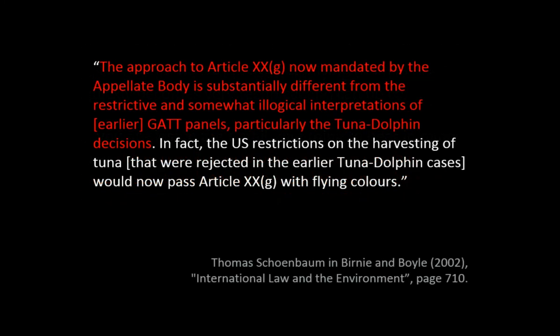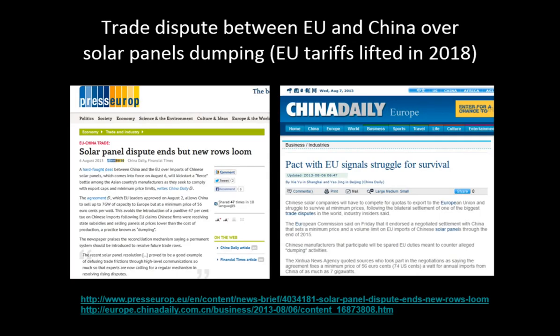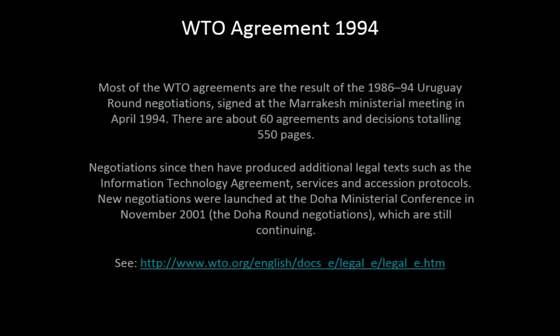The principles to be applied have changed over time — there have been somewhat illogical interpretations, and in fact the US restrictions in the tuna-dolphin case would now pass with flying colours. There are ongoing disputes — EU and China over solar panels and the like. GATT was signed in 1947, then there were rounds of negotiations, most importantly the 1994 Uruguay Round, concluded with the Marrakesh Agreements — about 60 agreements across 550 pages — which incorporated GATT, established the World Trade Organization, and built in a range of treaties including the Agreement on Technical Barriers to Trade and TRIPS.